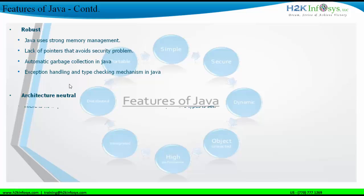Java is architecturally neutral, meaning it doesn't matter what kind of architecture you have, what the size of the system is, or what permitted types are used. We can have a SaaS-based architecture, a distributed architecture, an enterprise architecture, or a single system. In all these kinds of architectures, Java can be used — for single-system applications, distributed systems, and even cloud environments.